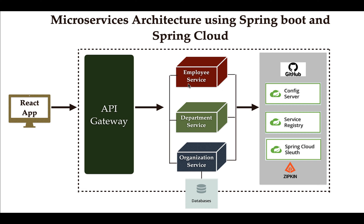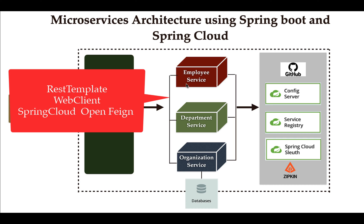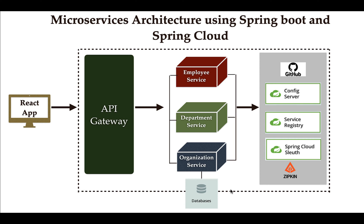Once we build the microservices, we'll see how they communicate with each other. We are going to use different ways to make an HTTP call from one microservice to another — for example, RestTemplate, WebClient, and the Spring Cloud provided OpenFeign library. In this course I'm going to show you different ways to make an HTTP call from one microservice to another.